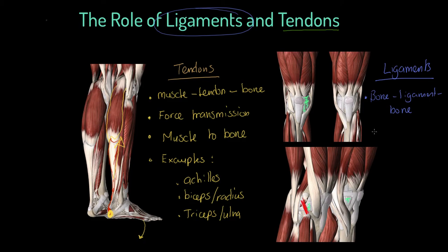A couple of critical points: ligaments have no force transmission. They do not transmit force to the skeletal system, because they're not connected to the force-generating muscular contractile protein — that muscle tissue. So they cannot be used for force transmission. But what they can be used for is stabilizing. In the case of the knee joint example, they stabilize the knee and prevent movement in undesired directions, such as what we might call abduction.